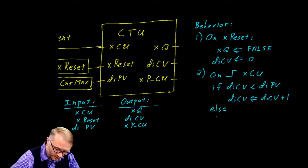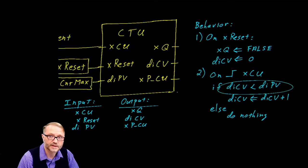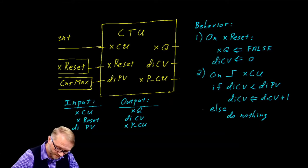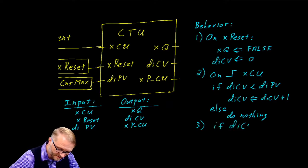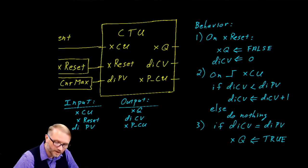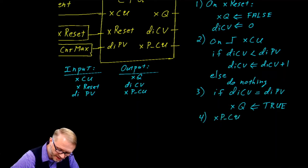We have an else: we do nothing. In that case, we could say that the current value and the program value are the same, so we stop counting. If the current value is equal to the program value, the boolean Q is assigned the value of true. One more behavior and we describe the entire block. The boolean previous count up is assigned the value of count up.